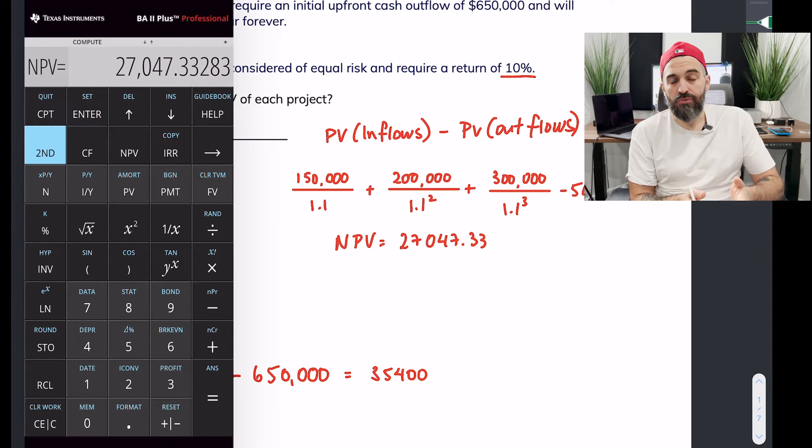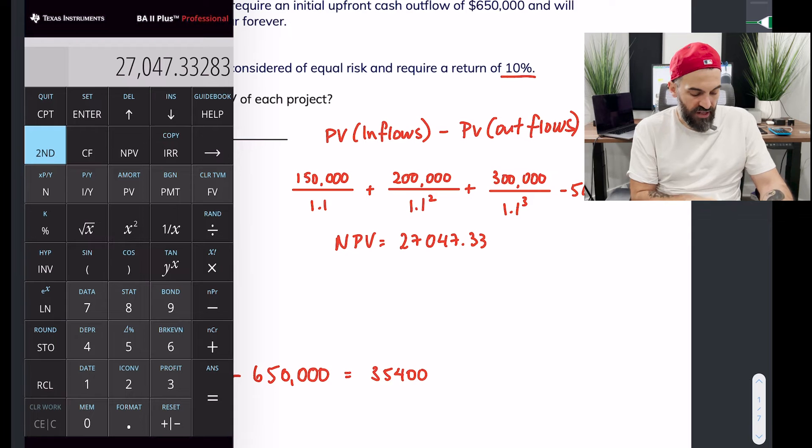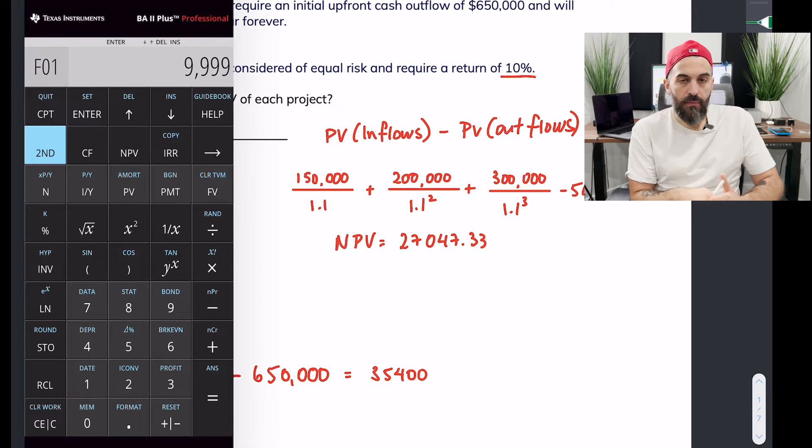Now you can't really do the net present value of a perpetual investment using the calculator. Well, there is a slight workaround. You can, for example, we're going to clear our cash flows, write $650,000 as your initial, $68,540 is your cash flow, and put a frequency of say 99,999 for example.